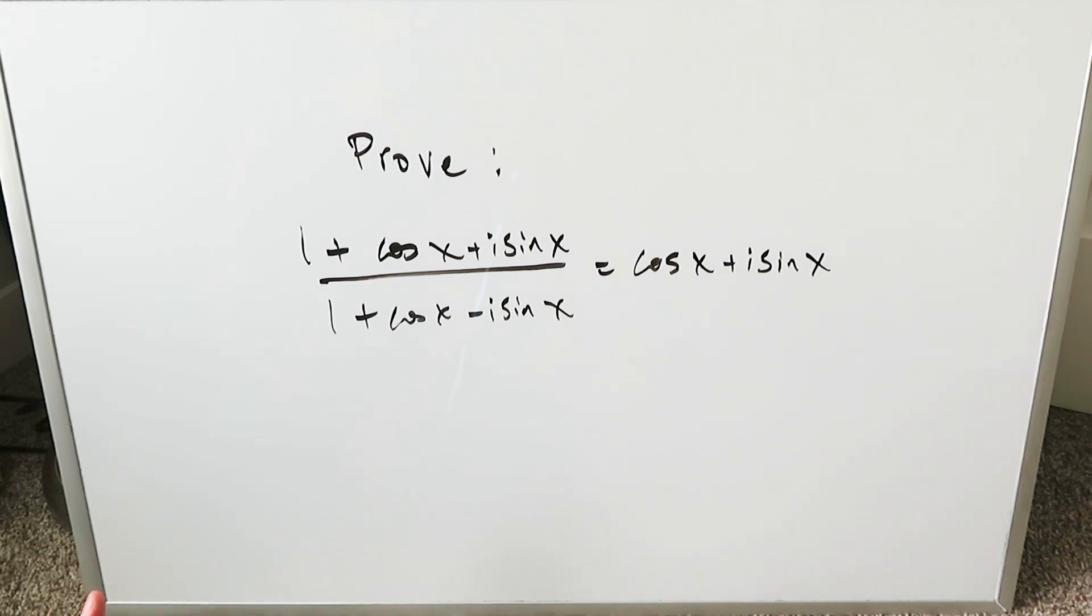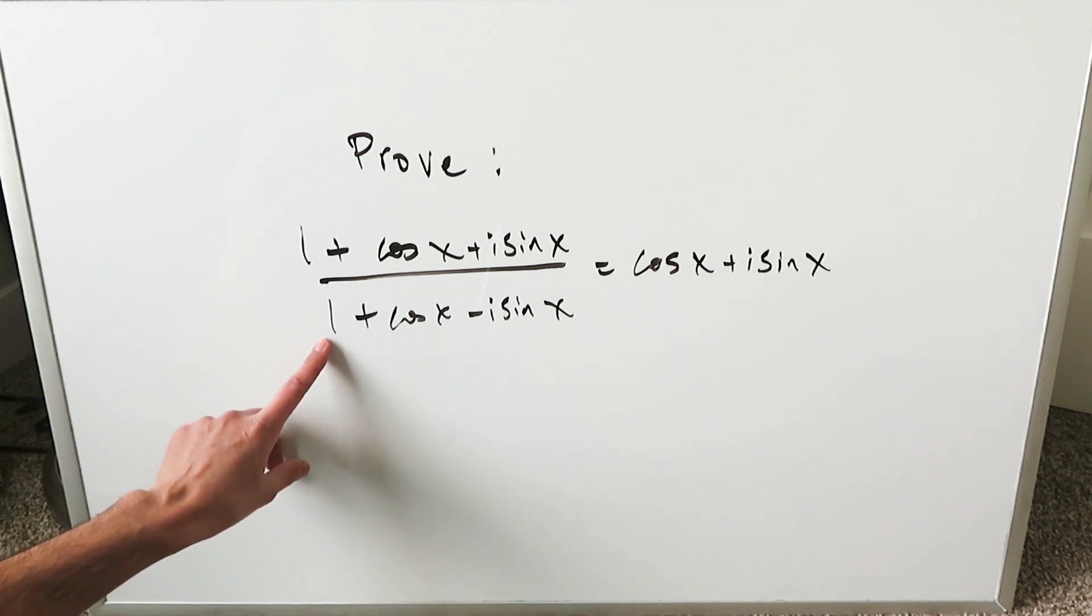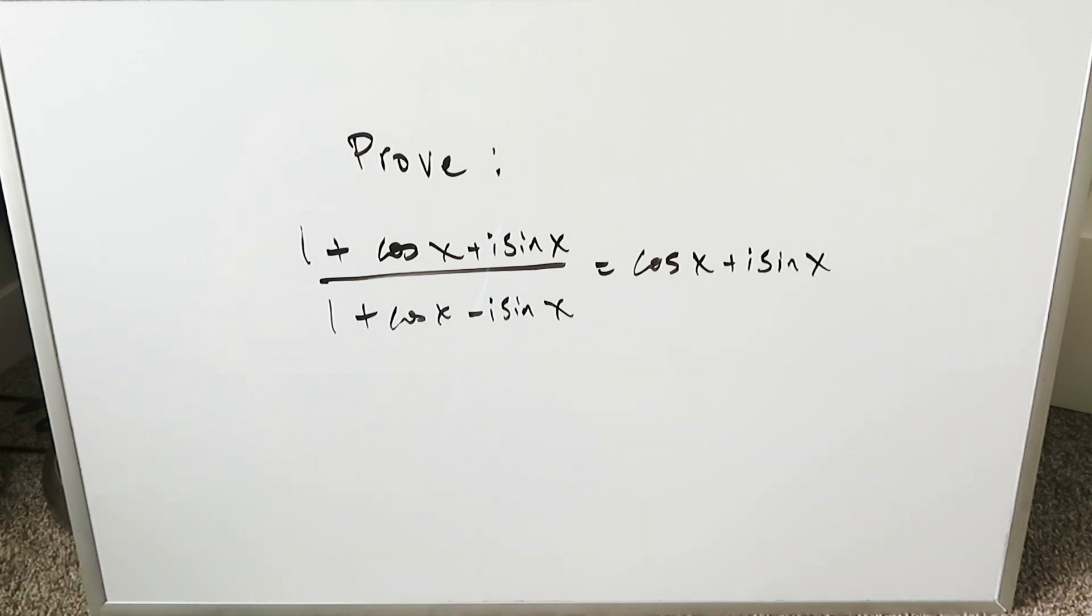We have a very interesting expression here to prove. I am Mr. Ish, thank you for joining me. The expression is (1 + cos x + i sin x) divided by (1 + cos x - i sin x) equals cos x + i sin x.